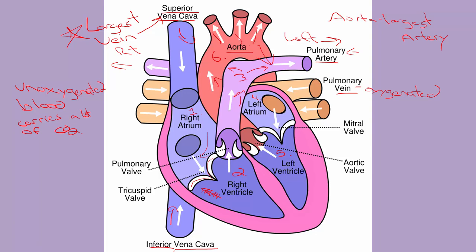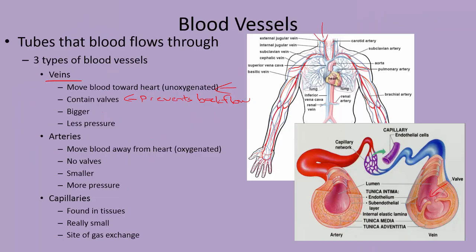The muscle lining of the left ventricle is much thicker than the muscle lining of the right ventricle. The dub beat pushes blood from the right ventricle up into the pulmonary artery, and the lungs aren't that far away, so the muscle doesn't need to be as thick. The left ventricle muscle needs to be very thick because it has to pump blood all the way to the rest of the body. That is why veins have less pressure — they are on the right side of the heart, where the muscles aren't as large.